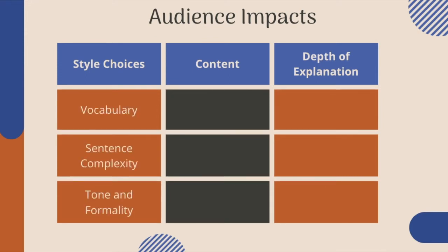When it comes to style, you'll change up the way you write depending on your audience. You'll see this in vocabulary choices — if you're writing for experts, you'll tend to use much more complicated vocabulary, whereas if you're writing for little kids, you'll pick simpler, easier to understand words. This also applies to sentence complexity. If you're writing for your peers, you might use shorter, simpler sentences, whereas if you're writing for an expert, you might use longer, more complicated sentences.